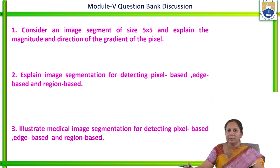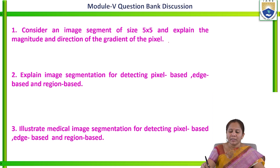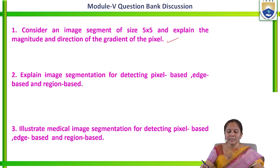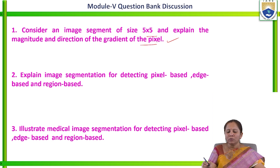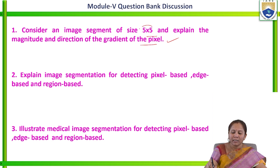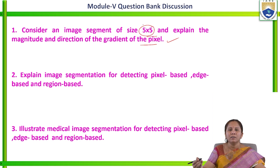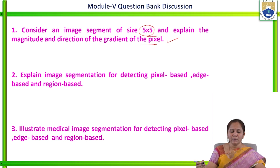Based on different concepts in module 5, the first question is: consider an image segment of size 5 by 5 and explain the magnitude and direction of the gradient of the pixel. Here we are asking especially about an image of size 5 by 5 and explaining the magnitude and direction of the gradient.